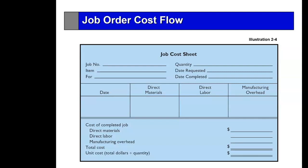Each job has a number — for example, an item might be a desk for Abu Dhabi University, quantity 100. Workers record the date and how much material they used, then their labor hours. As the job moves through the shop, each person records additional material used and time worked, until the job is finished.